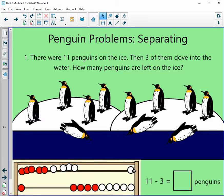And we subtracted 3 from this 11. So let's take away 3. 1, 2, and 3. How many do we have left? 1, 2, 3, 4, 5, 6, 7, 8. So our answer here would be 8.